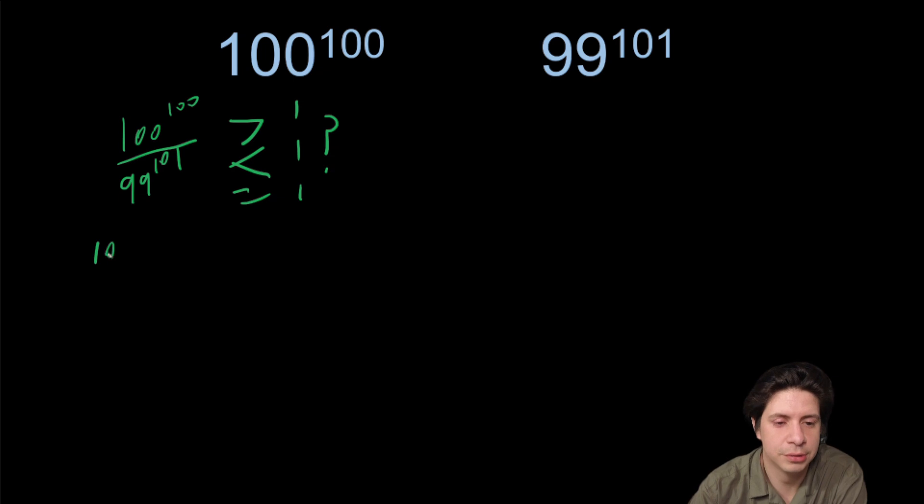So we're going to do 100 to 100 over 99 to 100 times one over 99. Now clearly this is bigger than one, but the question is, is it big enough to counteract this, which is clearly smaller than one?